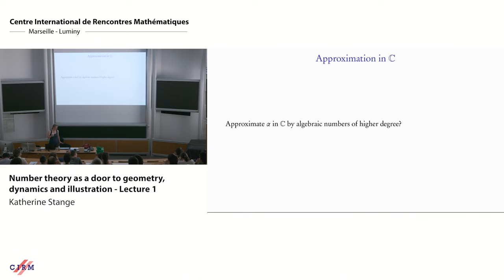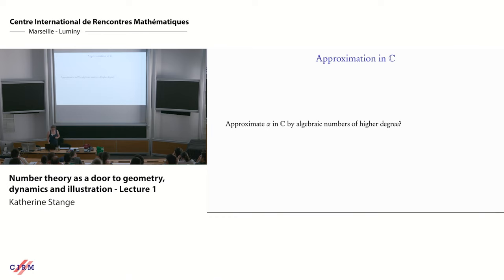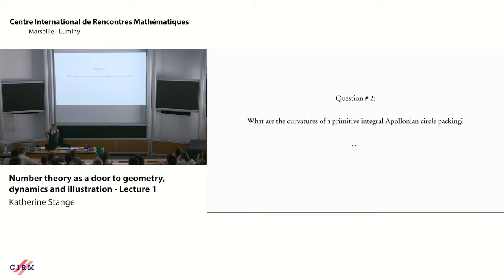The question then is: what about approximating complex numbers? With complex numbers you're off the real line, so you're not going to be able to approximate by rationals. Maybe the next best thing would be to take algebraic numbers of higher degrees — approximating, for example, by quadratics, solutions to quadratic equations. That's my first question and I'm going to start with that today. But first I want to give a hint of the other questions I'm going to talk about over the week.